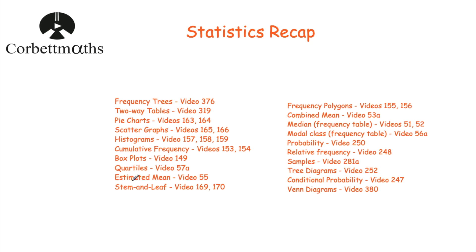Know how to find quartiles from a list. For an estimate for the mean from grouped frequency data: find your midpoints, multiply by frequency to get the fx column, add up the fx column for the grand total, and divide by the total number of values. Stem and leaf: know how to draw them, find the range, median, and mode. Frequency polygons: plot at the midpoint of each category and join consecutive points — but never the first to the last.